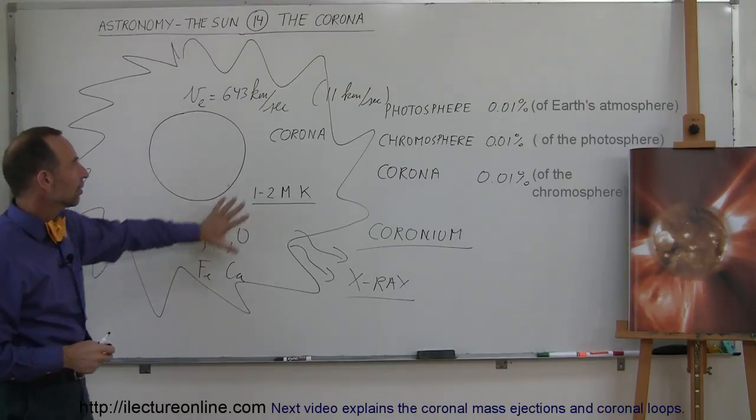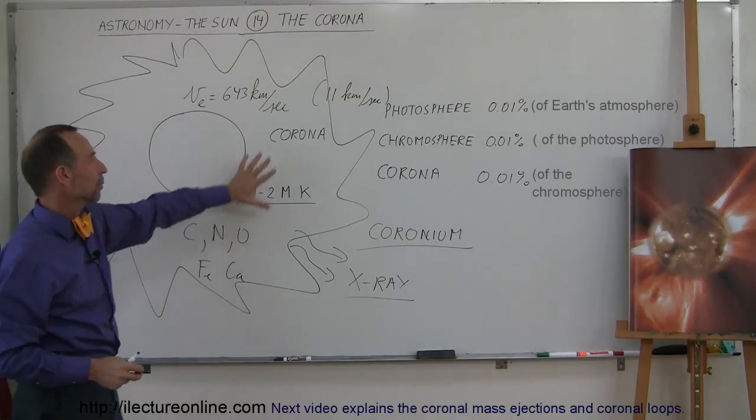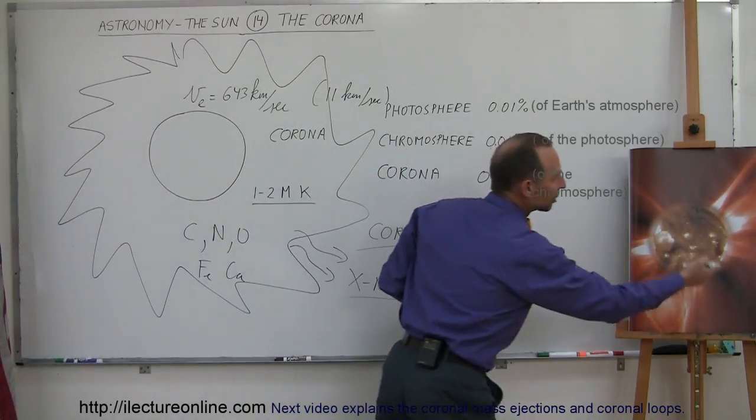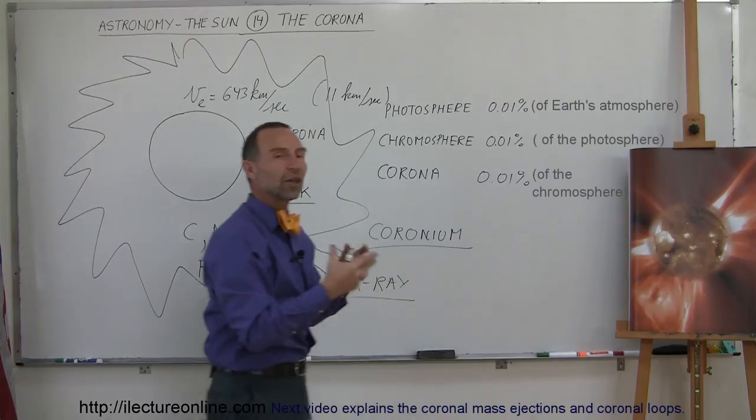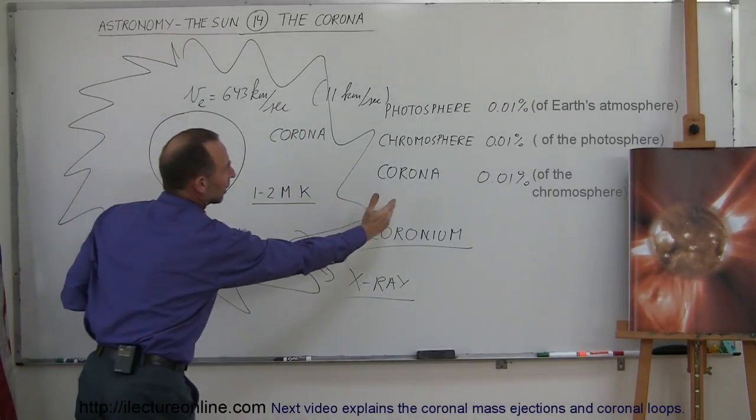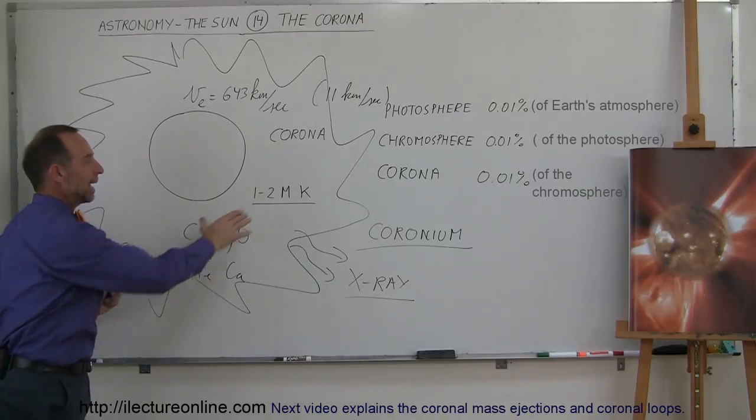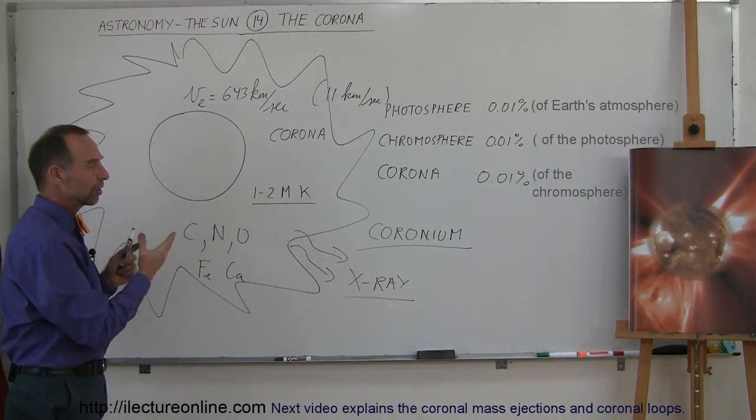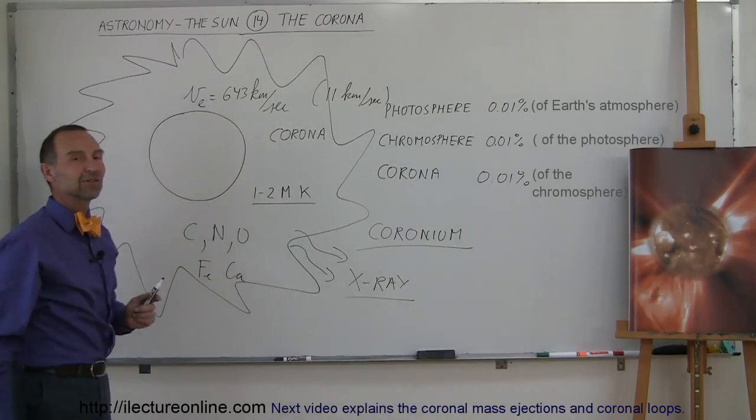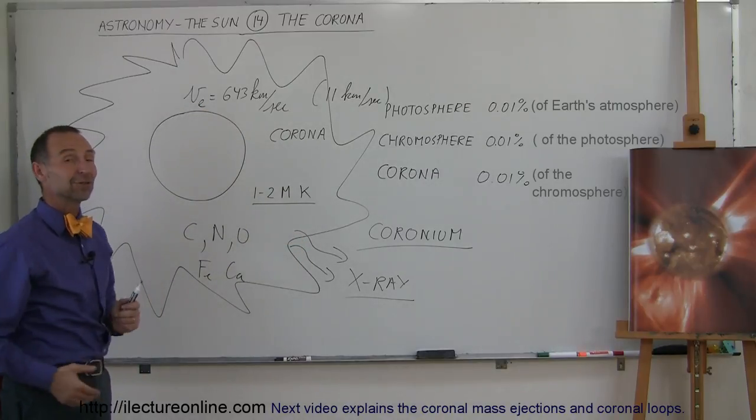So that's what we talk about when we talk about the corona. It's this region around the sun which has very spiky kind of shapes because of the activity on the sun. It covers a region that goes out millions of kilometers away from the sun's surface, and it has extremely high temperatures, which causes particles in that region to be able to be ejected away from the sun, exceeding the escape velocity of the sun. And that's the corona.